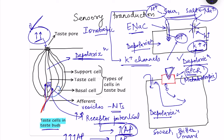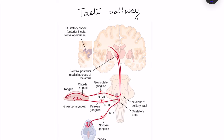Now for the taste pathway. Like other pathways, it consists of three neurons: first order, second order, and third order. Different nerves carry the information. The facial nerve (CN VII) carries information from the anterior two-thirds of the tongue. The glossopharyngeal nerve (CN IX) supplies the posterior part of the tongue, including the circumvallate papillae.